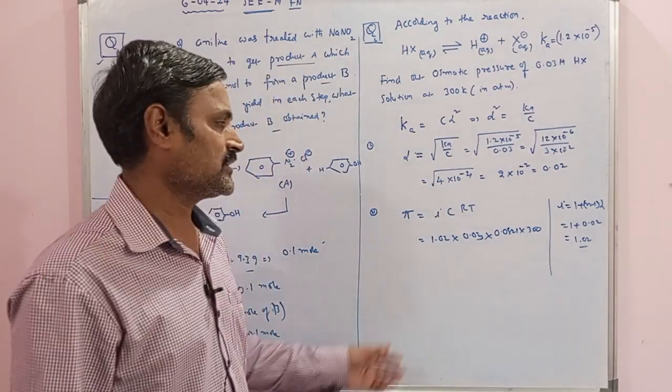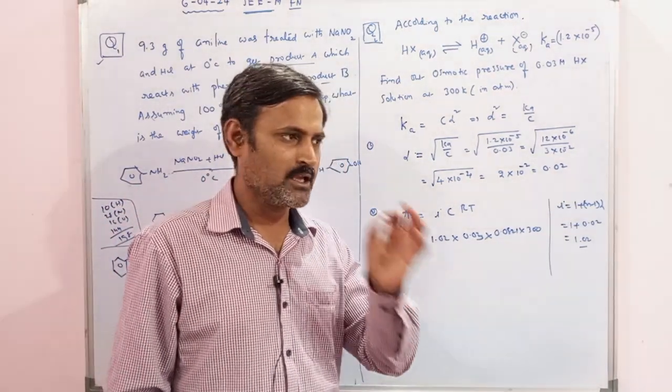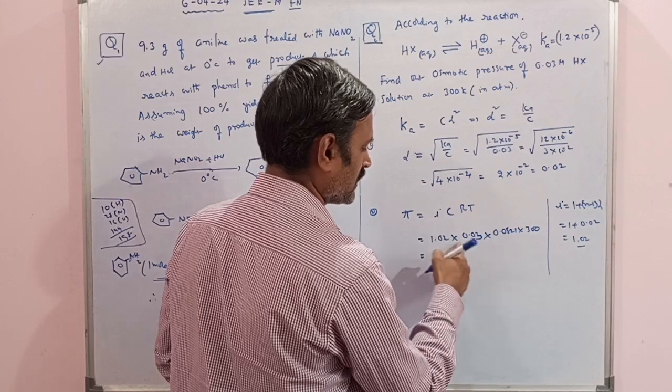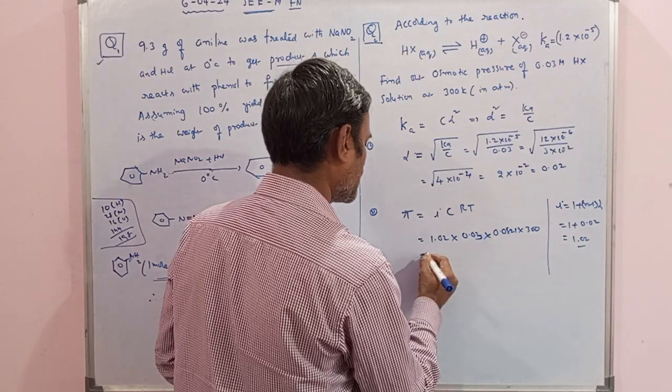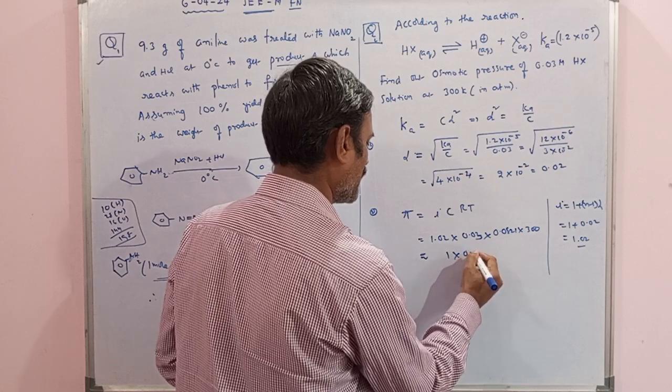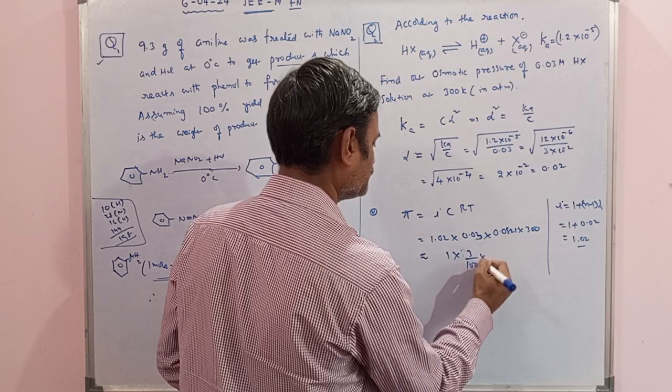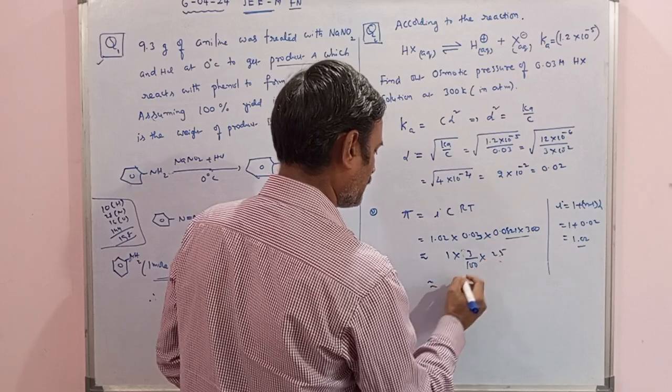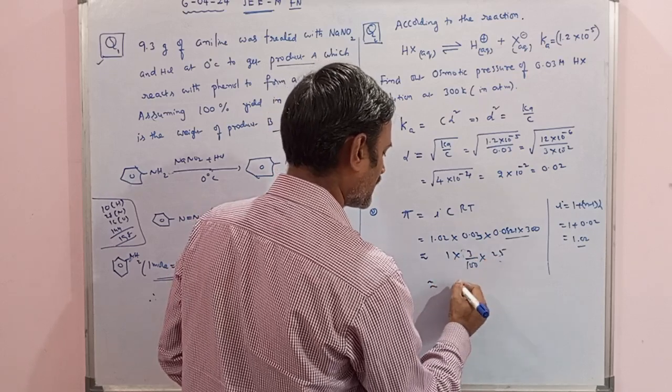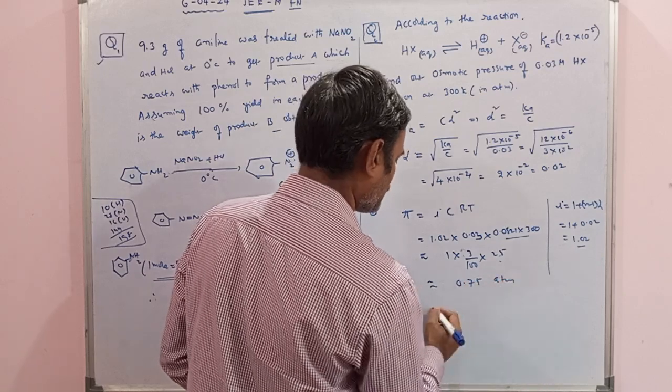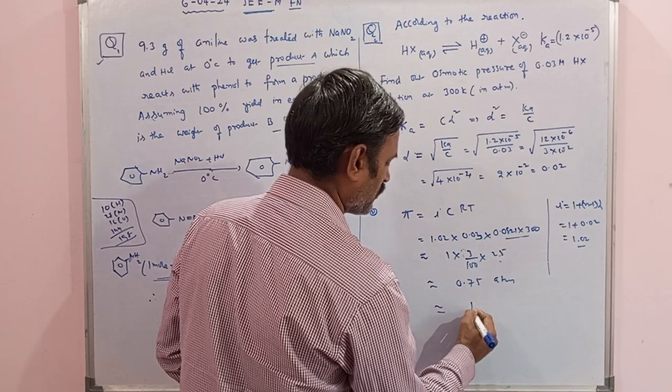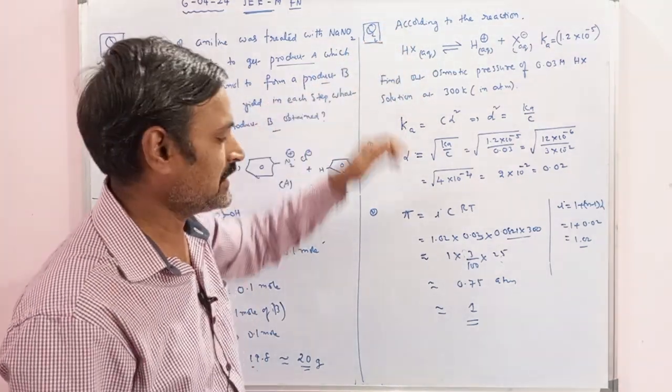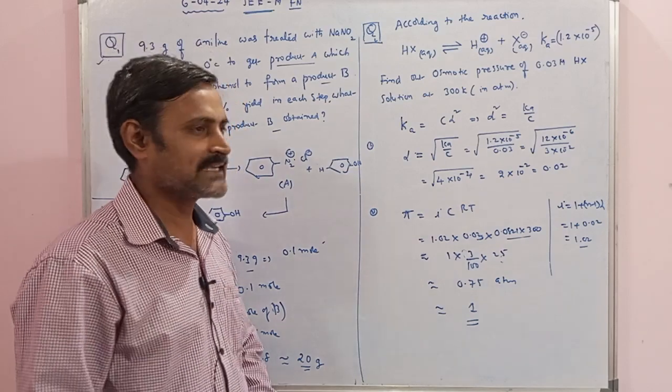Whenever this type of problem comes, 0.08 times 300 product is approximately 24 to 25. After that, 25 × 0.03, approximately this is 1.02 × 3/100 × 25. The approximation is 25 × 3 equals 75, and 75/100 is 0.75 atmospheres. The very close nearest integer answer is 1 for this osmotic pressure. So the nearest integer answer is 1 for the osmotic pressure of that HX solution.